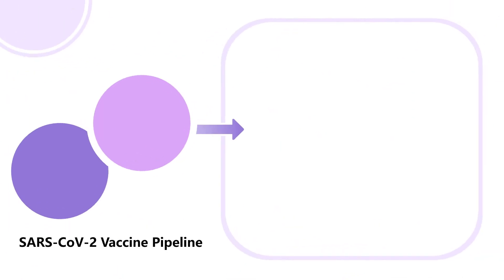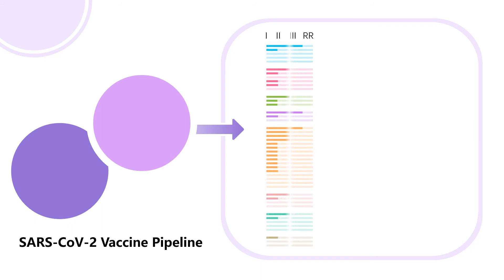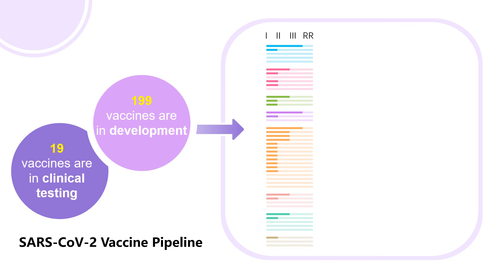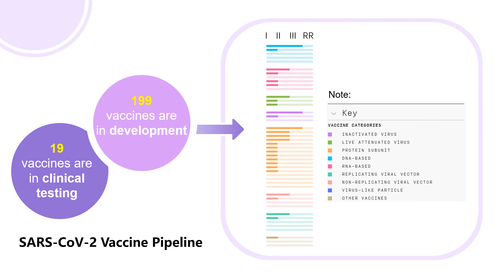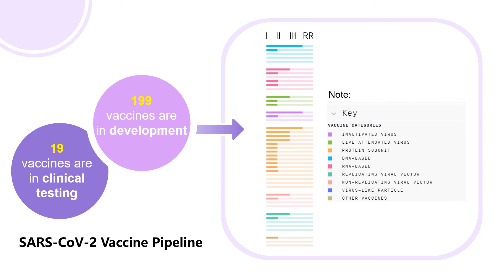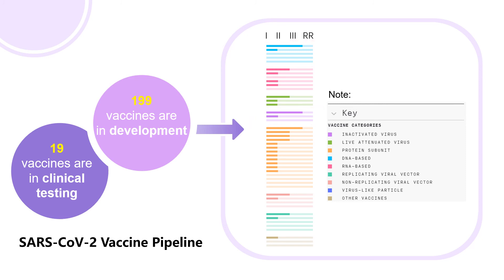Information on the latest SARS-CoV-2 vaccine development is shown below. There are 199 vaccines still in development, and 19 vaccines are in clinical trials. There is currently no approved vaccine. Different colors represent different vaccine types. Among them, protein subunit vaccines ranked first in research number, while RNA vaccines and inactivated virus vaccines rank higher in development speed. For more details, please click the link in the left corner.